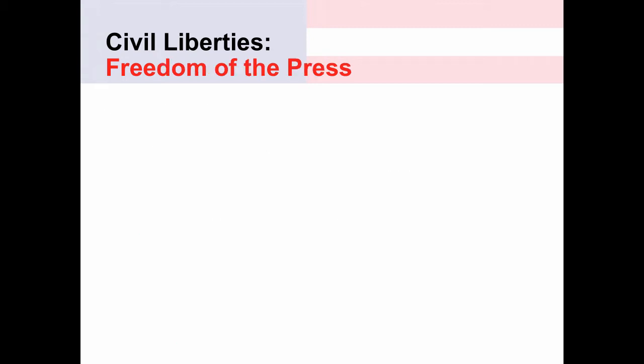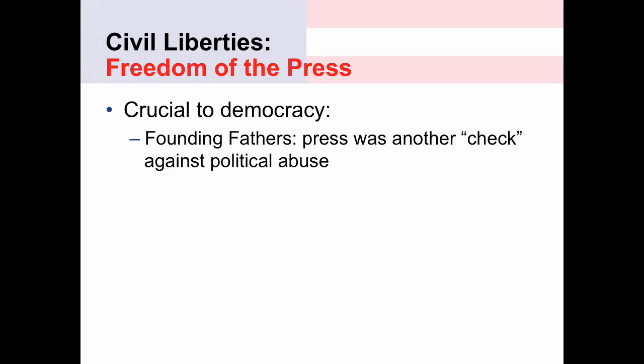Let's turn and talk about freedom of the press. The Founding Fathers viewed freedom of the press as crucial for democracy — another check against political abuse. The press has sometimes been called the fourth institution of Congress. You have the judicial branch, the executive branch, the legislative branch, and the press is viewed as that fourth institution. Freedom of the press and the ability of the press to report on what government does is viewed as crucial for democratic governance because it informs the people of what the government is doing so they can hold the government accountable.